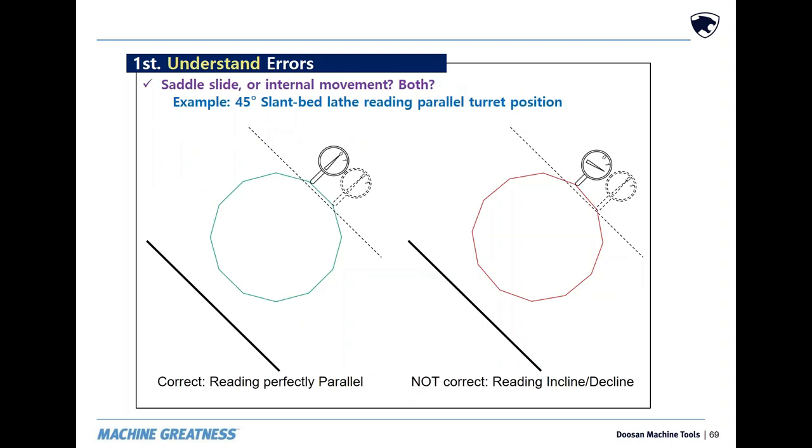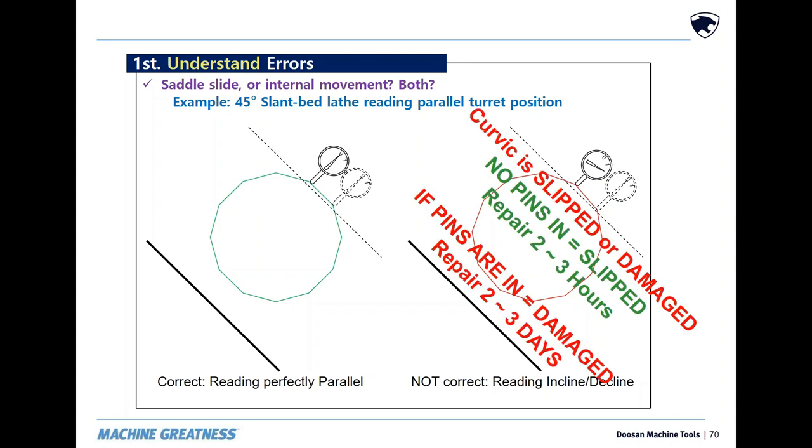Now that we've seen how unwanted movement happens, there are two tests that should be run before every turret alignment to find out what movement or damage has happened. First is parallelism to X axis, as rotational impact causes inclination and declination of the parallel surface to the X axis. Without the pins in the Kervik, it is in need of an adjustment. If the pins were left in and it moved, then it is now a repair.